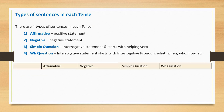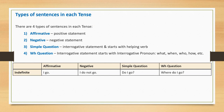Let's consider some examples. Present indefinite affirmative: I go. Present indefinite negative: I do not go. Present indefinite simple question: do I go? Present indefinite WH question: where do I go?